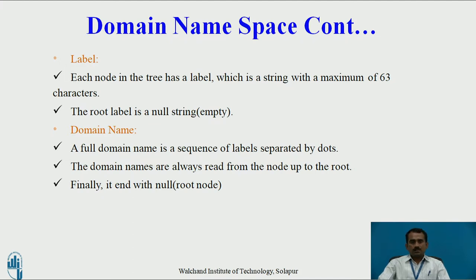What is a label? Each node in the tree has a label, which is a string with a maximum of 63 characters. The root label is a null string. A full domain name is a sequence of labels separated by dots. The domain namespace is always read from the node up to the root, and finally it ends with the null or root.